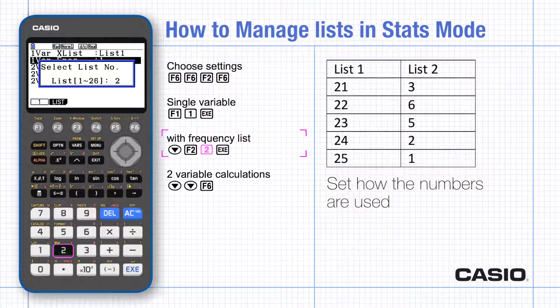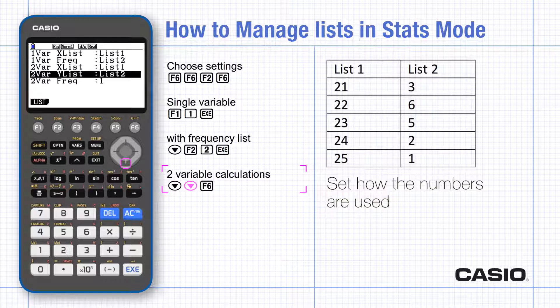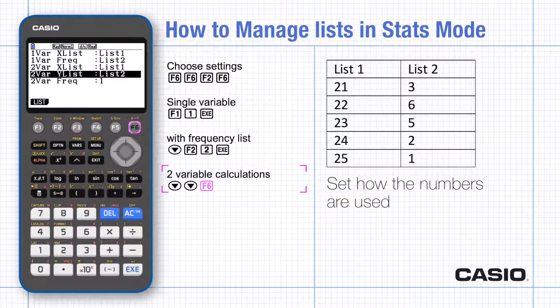Notice that the default setting for a two variable calculation is already list 1 and list 2. You can change these to any two lists and set a frequency as well should you need to.